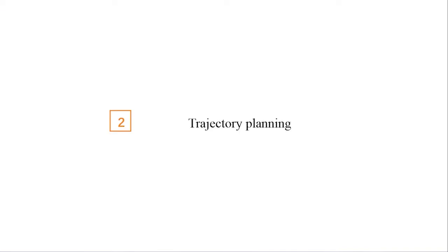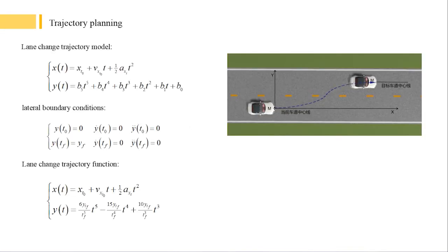The second part is Trajectory Planning. As shown in the figure, during the lane change process, the lane change vehicle travels from the centerline of the current lane to the centerline of the target lane.